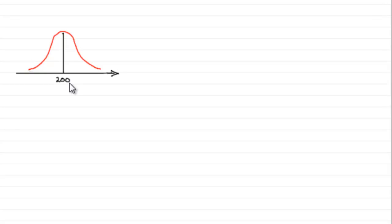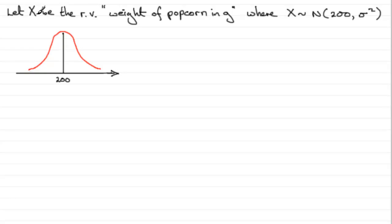Now when it comes on to part B, what I'd want to do is, first of all, define a random variable. Give a letter for the random variable. The question doesn't have a letter in it, so I would say something along these kind of lines. Let X, this is a capital letter for random variables, let X be the random variable, weight of the popcorn in grams.